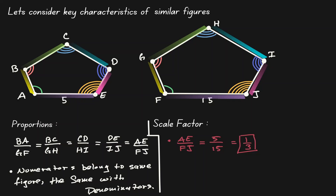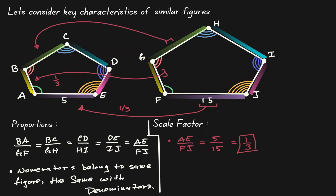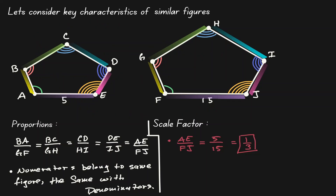What this scale factor means is that if we take any side from the right figure and multiply by one third, we obtain the corresponding side of the left figure. So if we get GF and multiply by one third, we get BA. If we get GH and multiply by one third, we get BC. If we get HI and multiply by one third, we get CD, and so forth. We can say that these two figures have a scale factor of one third.